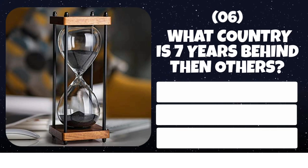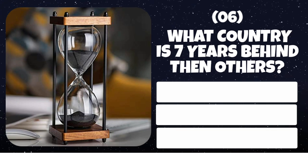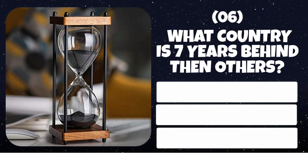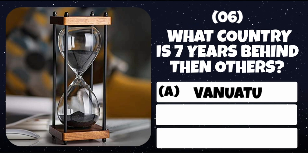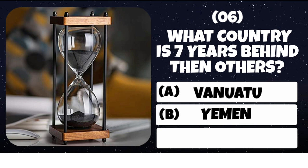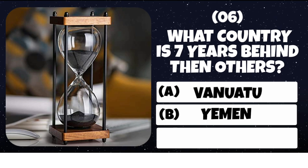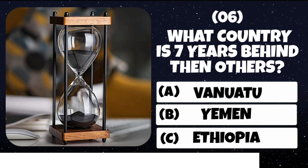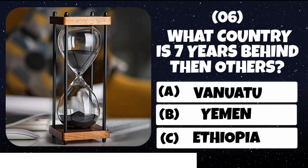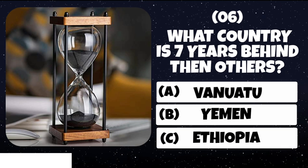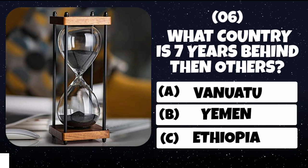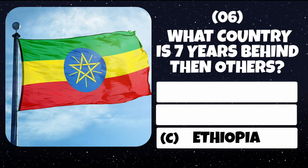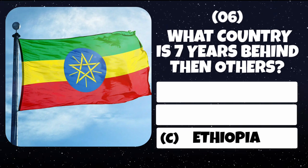Question number 6. What country is 7 years behind the others? Option A: Vanuatu. Option B: Yemen. Option C: Ethiopia. Correct answer is Ethiopia.